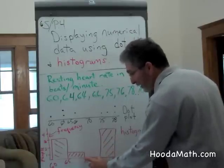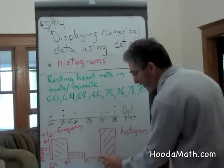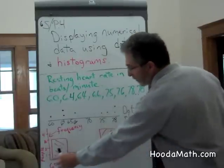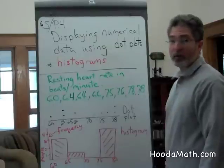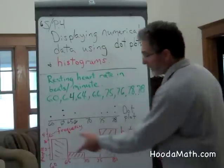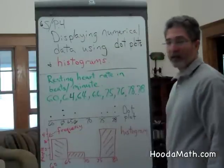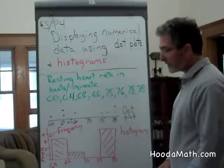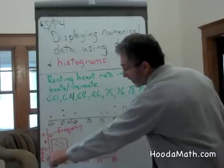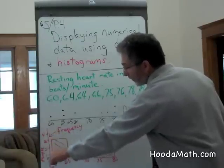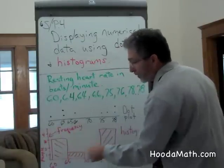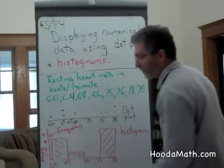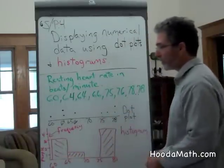This bin width covers 70 to 74, and this one from 75 to 79 beats per minute. There's a vertical axis which tells you the frequency. So the height of the bin, or the bar, is the frequency of people who have a heart rate between 60 and 64 beats per minute.